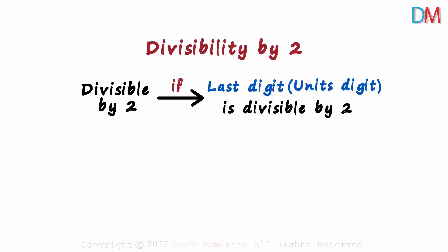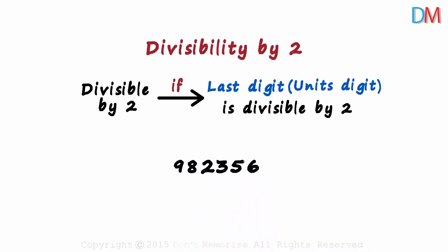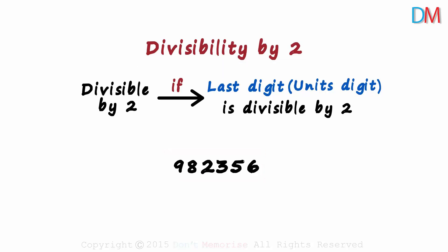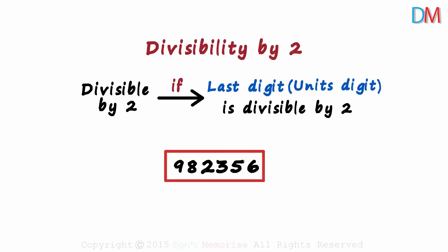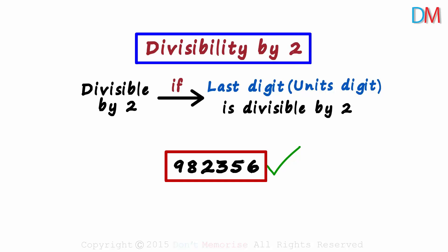Here's your first number: 982,356. Is this number divisible by two? To answer this quickly, we just need to look at the last digit. The last digit is six, and since six is divisible by two, the entire number is divisible by two. So 982,356 is divisible by two.